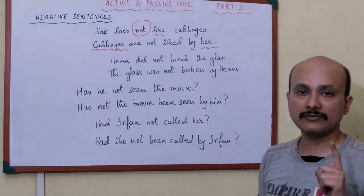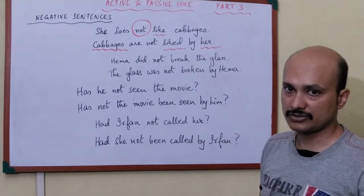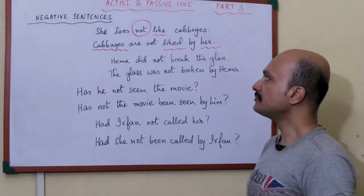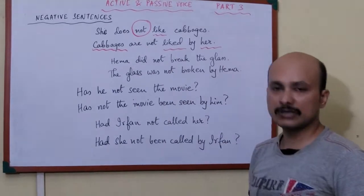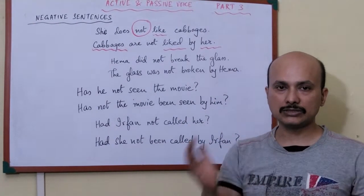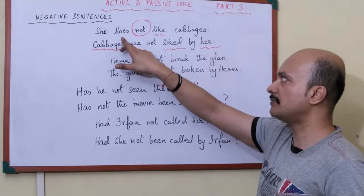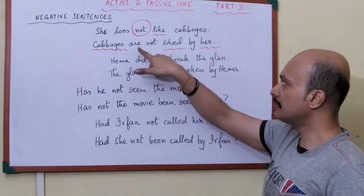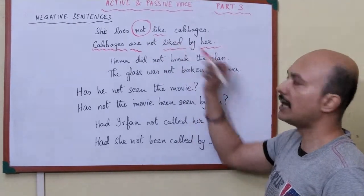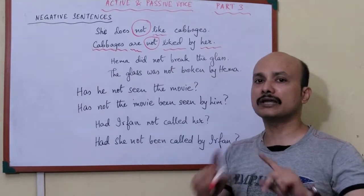So what happens in case of negatives is that the negative word stays in the middle — that is, between the supporting word and the main word, both in assertive and question sentences. 'Does not like': 'does' is the supporting word, 'like' is the main word, and 'not' is in the middle. Similarly in the passive, there is the supporting word 'are' and the main word 'liked', and between them we write the negative word. That's the basic rule for negatives — write the negative word between the two verbs.